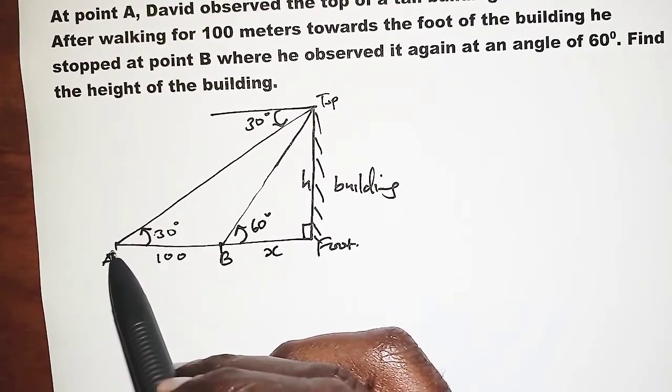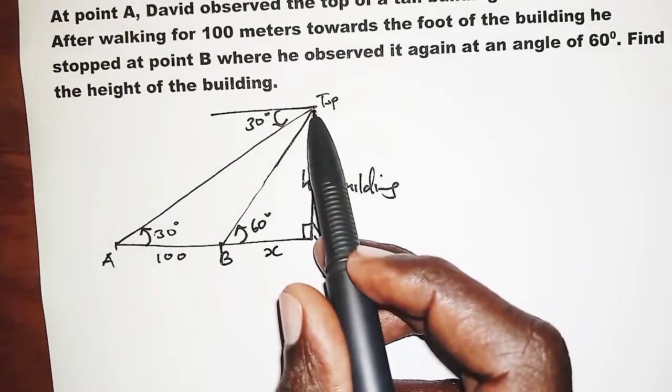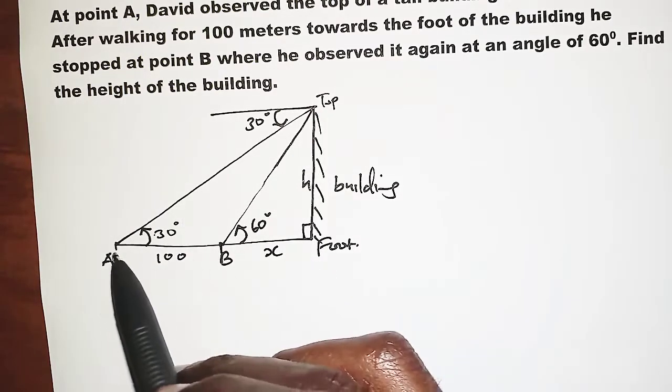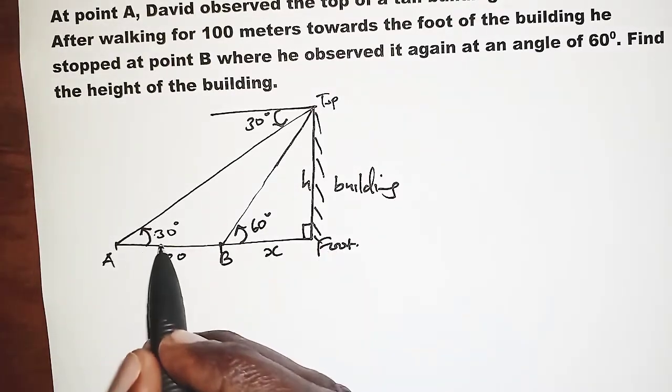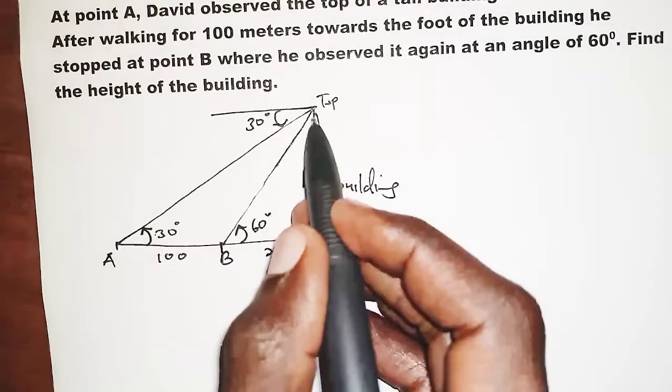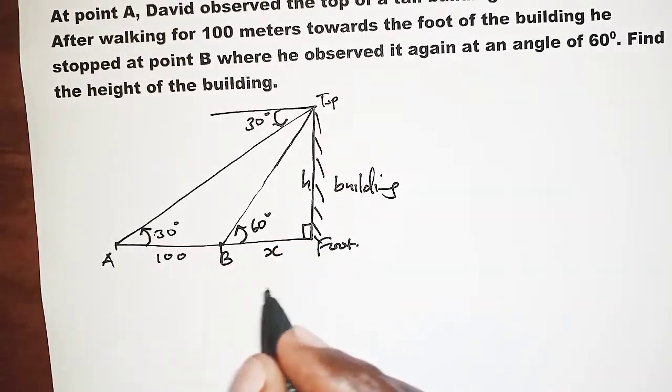So that, considering the bigger triangle from A up to the top, to the foot, and back to A—that bigger triangle—considering that triangle, we'll have 30 degrees related to the height and the base by tangent.